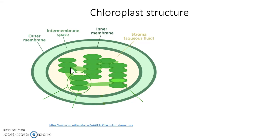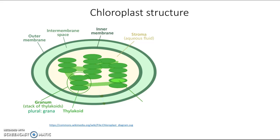There are other structures inside the chloroplast too. There are flattened green disks called thylakoids, and they are arranged in stacks. Each stack of thylakoids is called a granum, and the plural form is grana. We can go even deeper inside a thylakoid, and that interior space is known as the lumen. So these are all the parts of the chloroplast that you need to know.